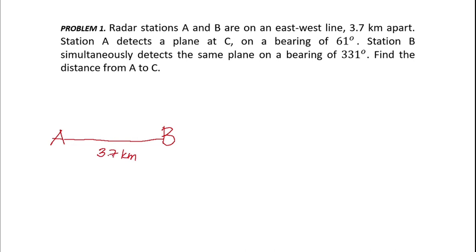Station A detects a plane at sea at a bearing of 61 degrees. In order to have the bearing, we draw a north-south line through A. This is method one because the bearing is not expressly stated as north or south — it is from due north. So 61 degrees from due north at point C.